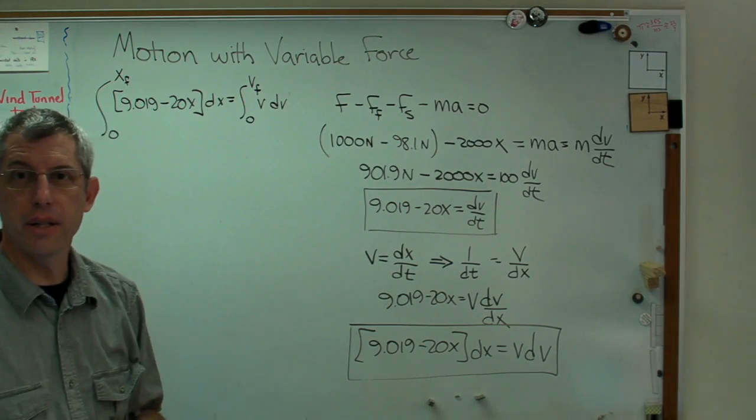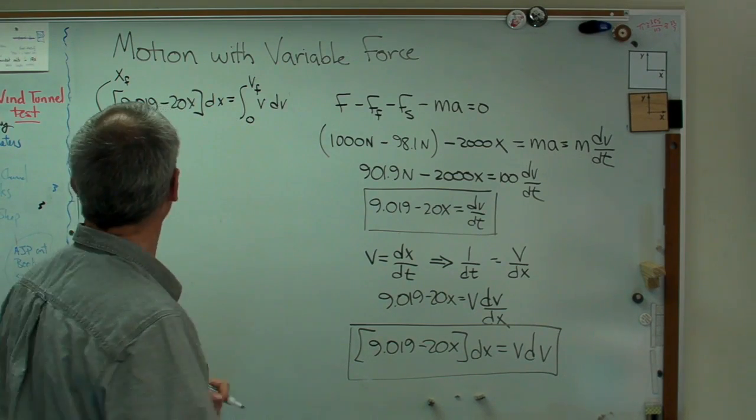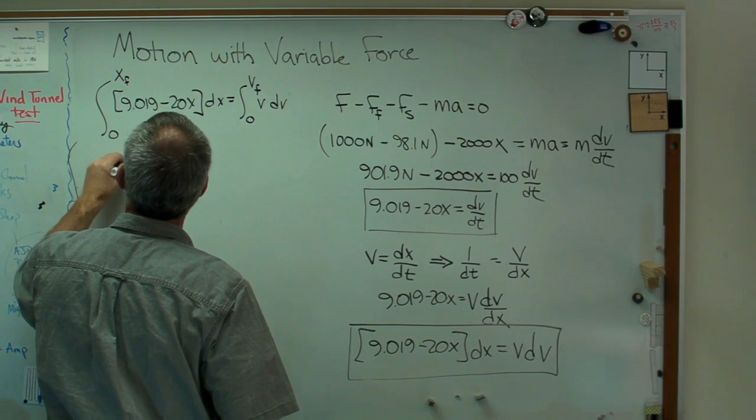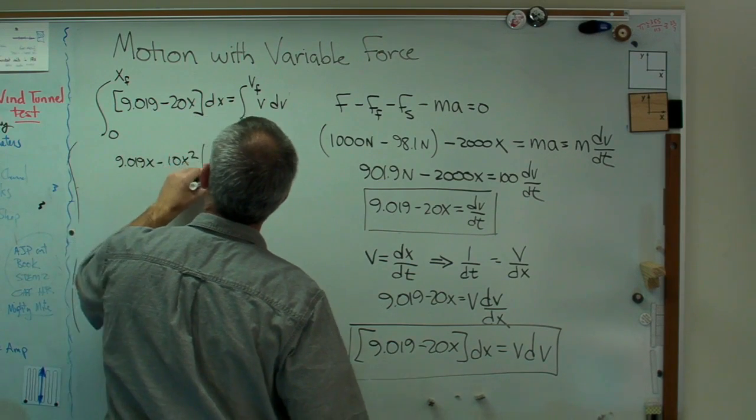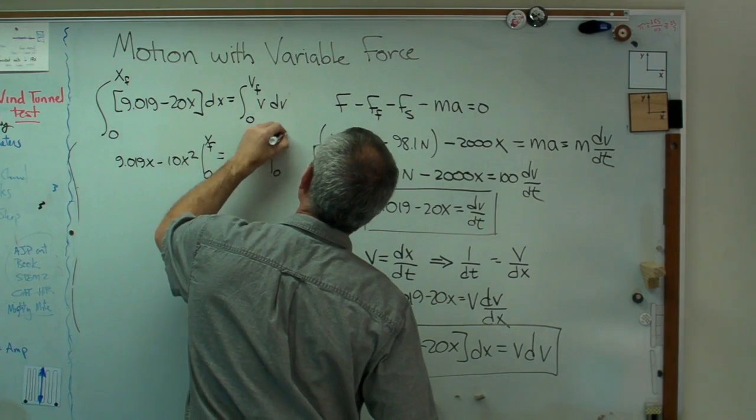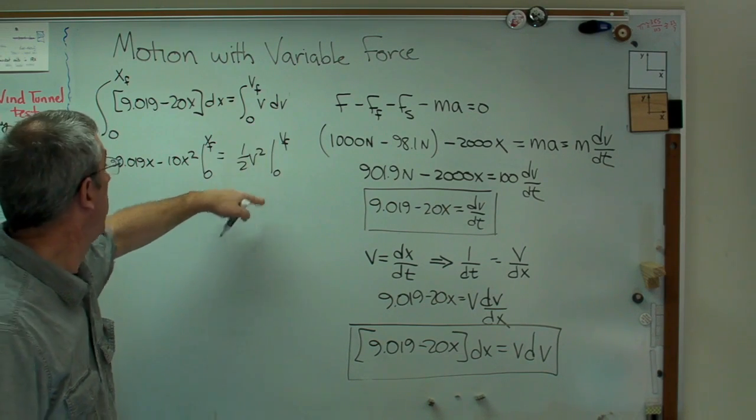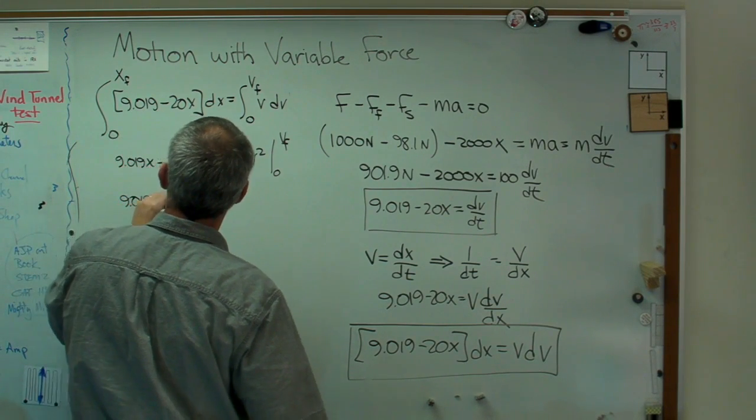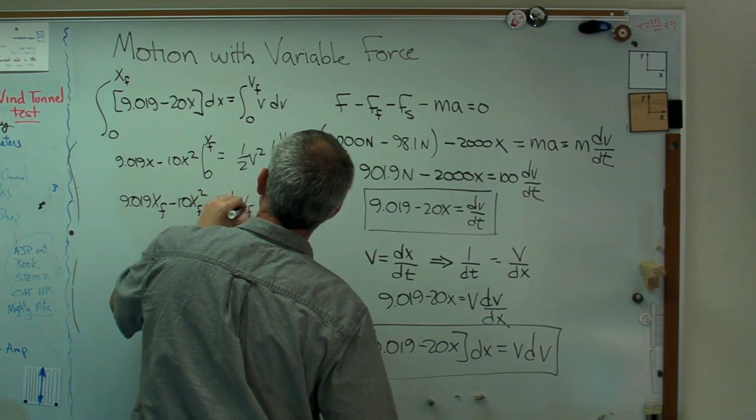Same thing here, v final, vdv. Well, that doesn't look too hard, does it? If you've been through about the first month or so of calculus class, you ought to be able to do that. I learned this in high school. You guys might have learned it before then. So let's integrate 9.019x minus 10x squared. That goes from 0 to xf equals 1 half v squared going from 0 to v. There we go.